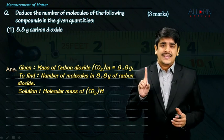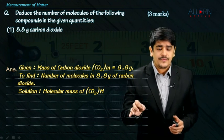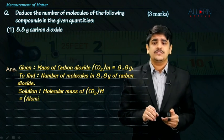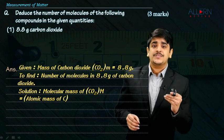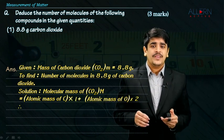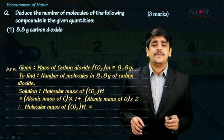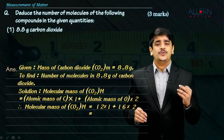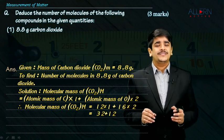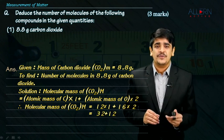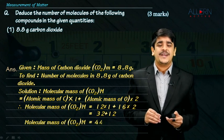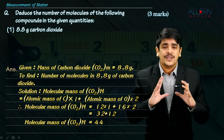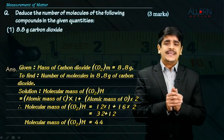One atom of carbon weighs 12, and two atoms of oxygen weigh 16 each. The atomic mass of carbon multiplied by 1, plus the atomic mass of oxygen multiplied by 2. So the molecular mass of carbon dioxide is 12 × 1 + 16 × 2, which is 12 + 32 = 44. The molecular mass of carbon dioxide is exactly 44.